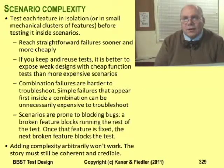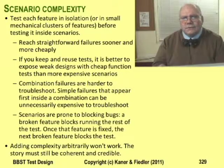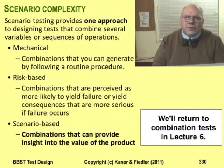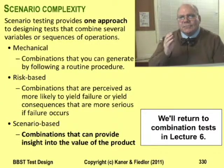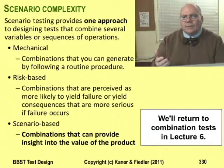Early in testing, you're better off testing your features one at a time. Get them reasonably stable before you try combinations of several features. Otherwise, you're going to be plagued with blocking bugs. As the program gets more stable, you can create more complex tests. But for scenarios, the complexity must be believable. There are other ways to do combination testing with arbitrary combinations — we'll study these in lecture six.